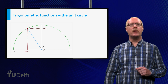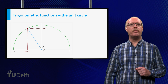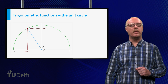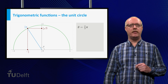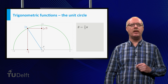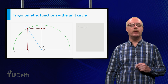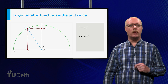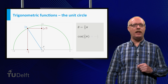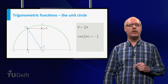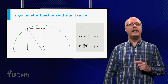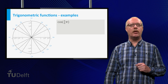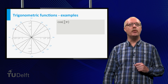Now the unit circle can be used to define both the sine and the cosine for other values of the angle theta as well. For instance, consider theta equal to 2π/3. This angle is indicated in the picture, and we have to determine the indicated values at the horizontal and the vertical axis. Note that the value of the cosine at the horizontal axis is negative, and that the value of the sine at the vertical axis is positive. In this way we can find the values of the sine and the cosine for all special values of the angle theta in the unit circle.